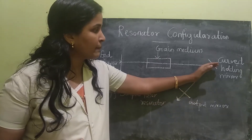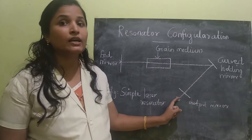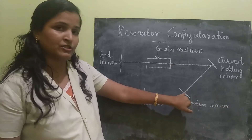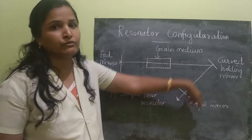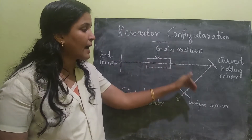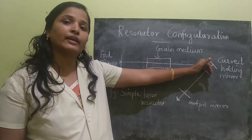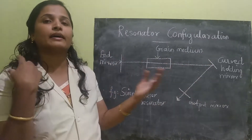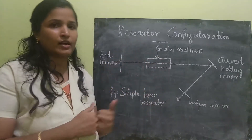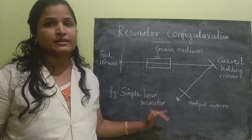That means the output mirror will be partially reflecting. So when the laser radiation arrives there, part of the radiation goes back into the laser cavity and part comes out. The part going inside will reflect back and forth, gain more energy, and come out again. This process repeats. This is the concept of a simple laser resonator.